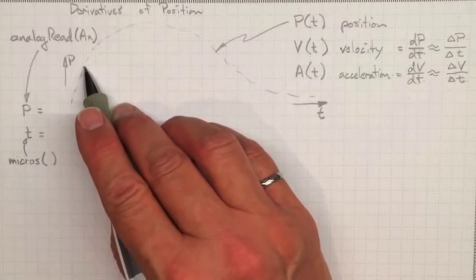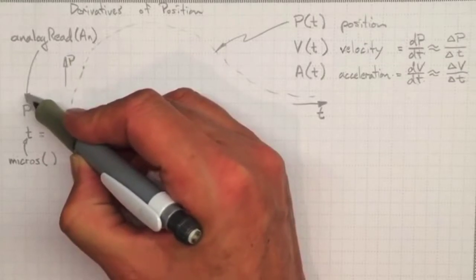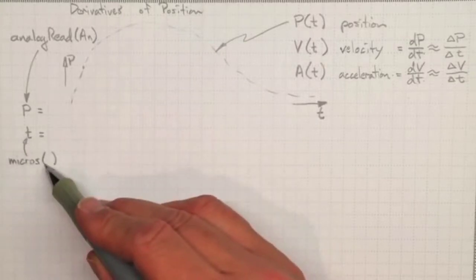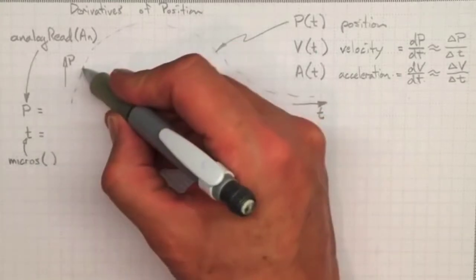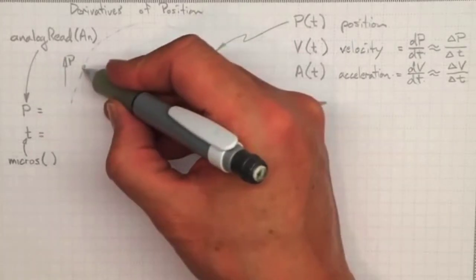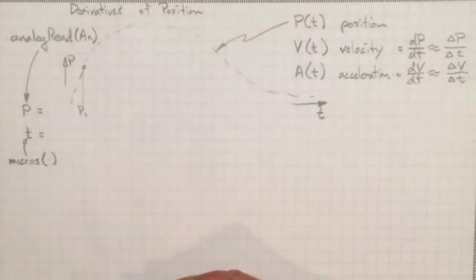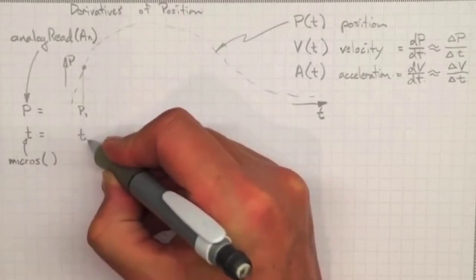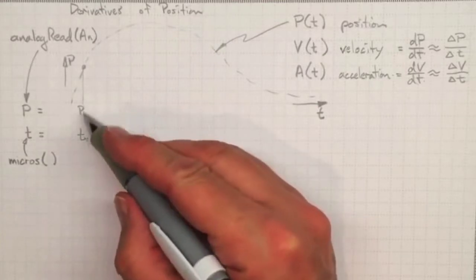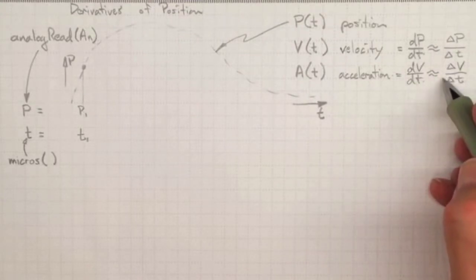That'll tell us what the position is anytime we go and make a measurement. The micros function will tell us what the time was when we made that position measurement. So if the system was in that position there, we could do an analog reading and find out that the position was that at time one, and that time one was whatever micros said at that time. Now all we know is a position and a time, so we really can't even make a guess at velocity and acceleration.